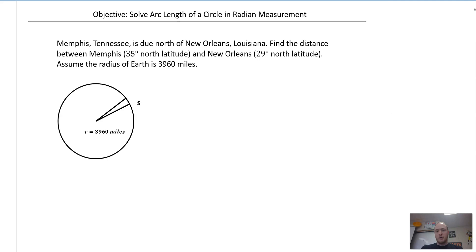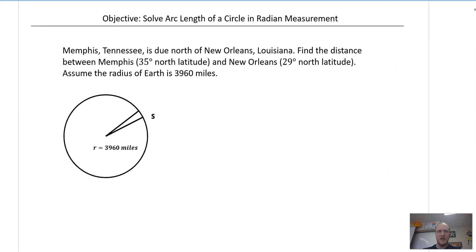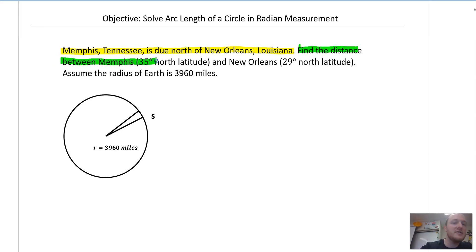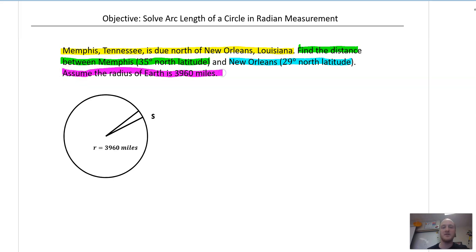Let's look at some context. Now that I know how to find arc length, let's apply it to something — when are we ever going to use this? This problem says Memphis, Tennessee is due north of New Orleans, Louisiana. Find the distance between Memphis — at 35 degrees north latitude — and New Orleans — at 29 degrees north latitude — assuming the radius of the earth is 3,960 miles. We're going to use S equals R theta.